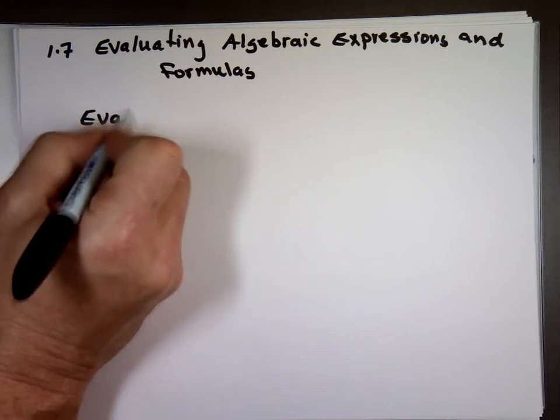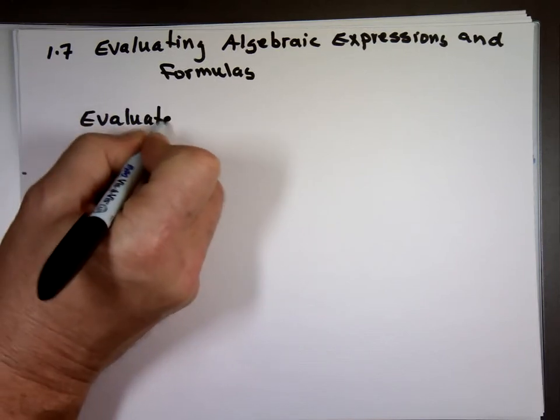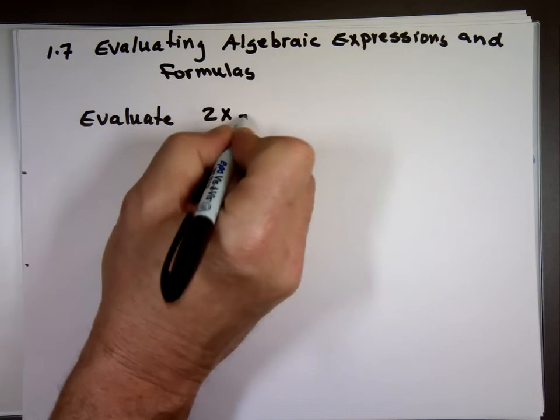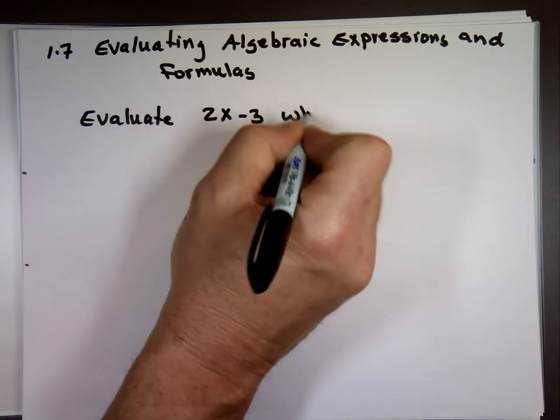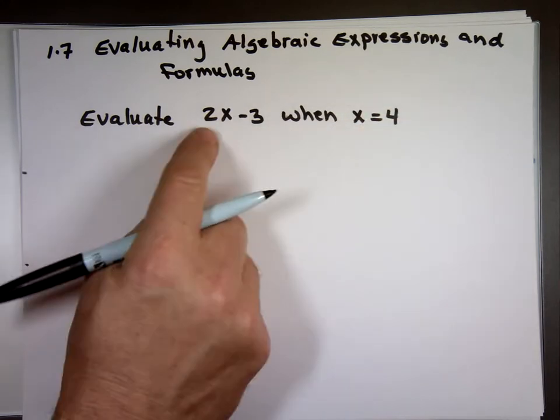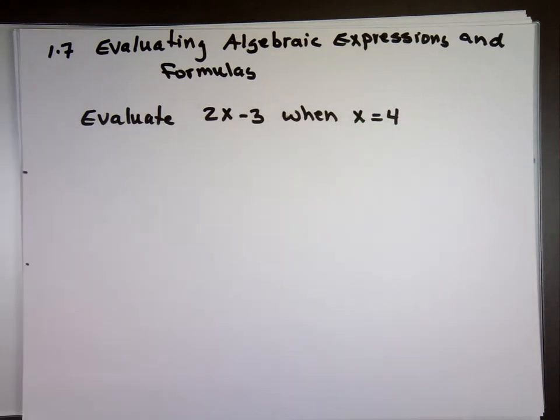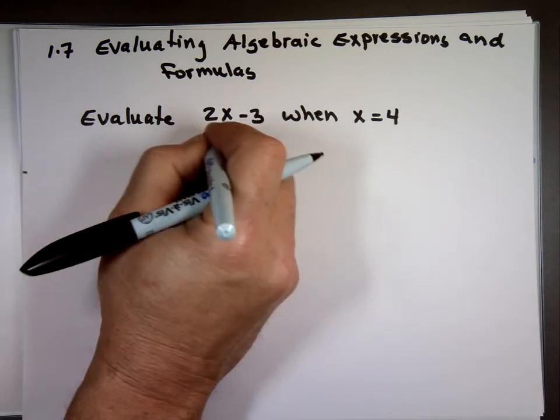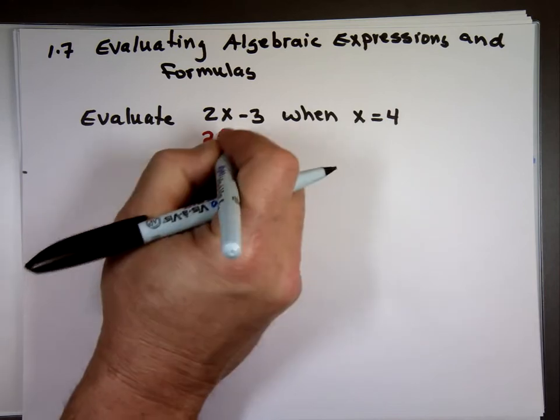So evaluate 2x minus 3 when x equals 4. What's the value of this expression when x is 4? So what would you do? You take the x out and you replace it with what? 4.